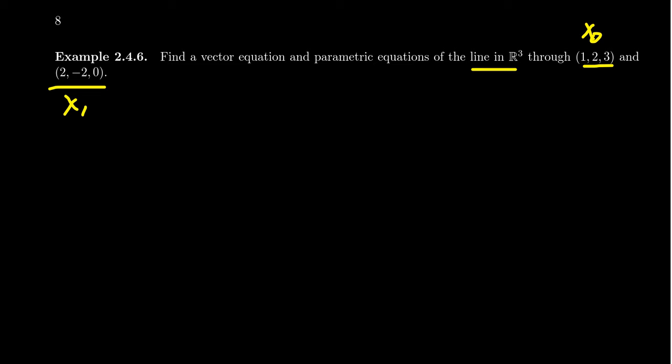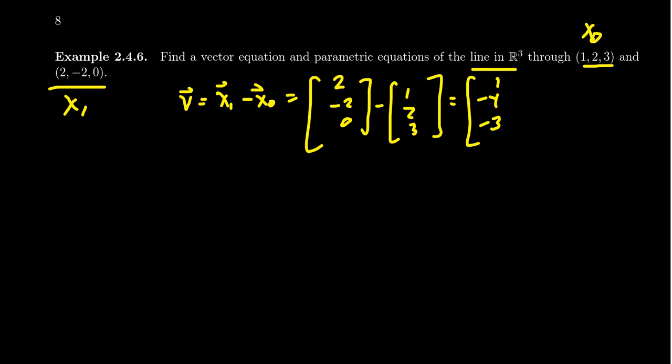Now to find a line, I need a single spanner. I need some spanner, which we're going to call v. v is going to be formed by taking x₁ minus x₀. So we're going to take (2, -2, 0) and subtract from it (1, 2, 3). And when we do that, we get (1, -4, -3). This then gives us the slope vector of the line.